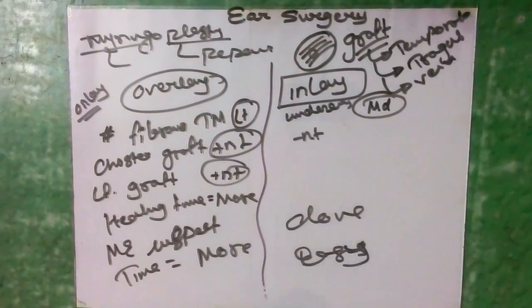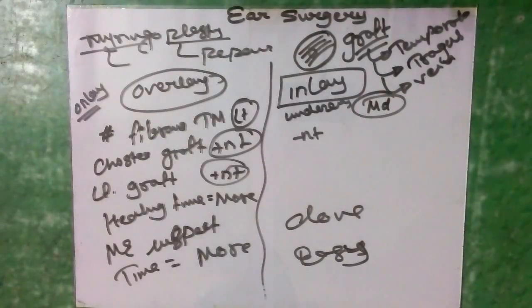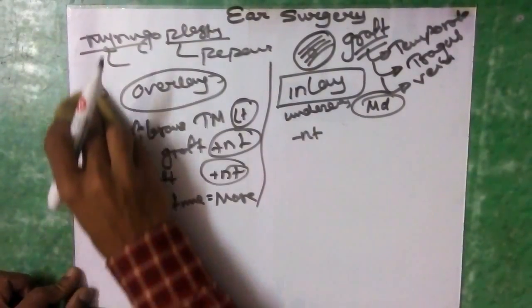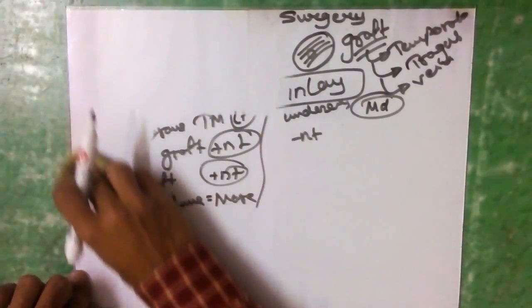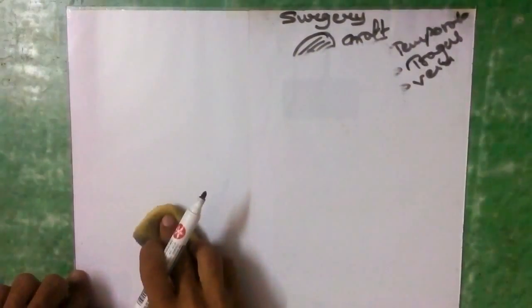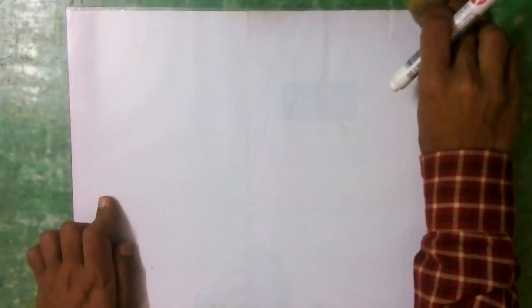Now coming to the third surgery: tympanoplasty. 'Tympano' refers to the middle ear and '-plasty' means repair. Tympanoplasty involves repair of either the tympanic membrane or the ear ossicles, using a graft according to the disease condition.